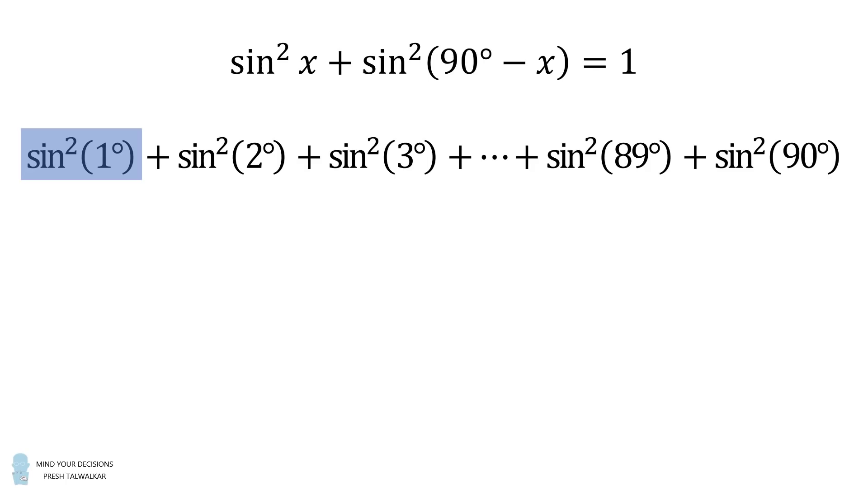We can pair sine squared 1 degree with sine squared of 89 degrees. This sum is equal to 1. We can then pair sine squared of 2 degrees plus sine squared of 88 degrees. That sum is also equal to 1.